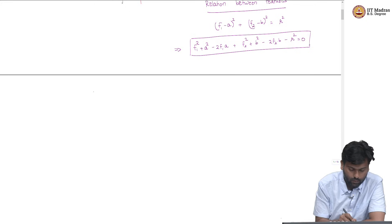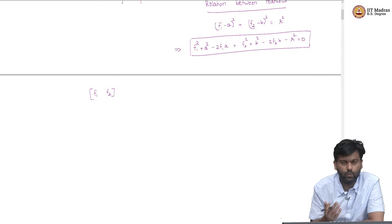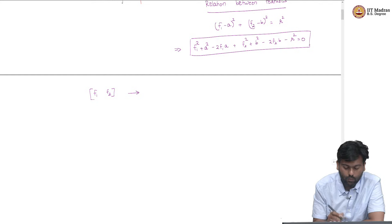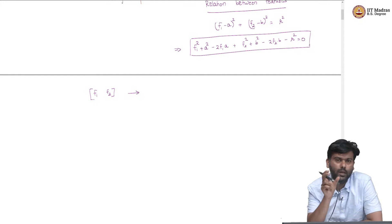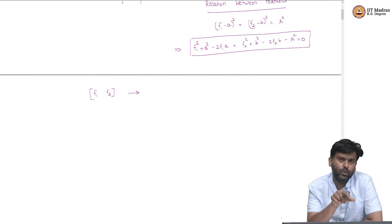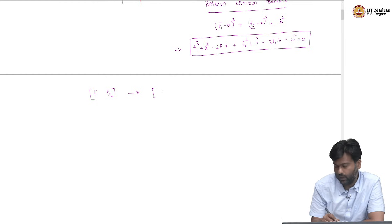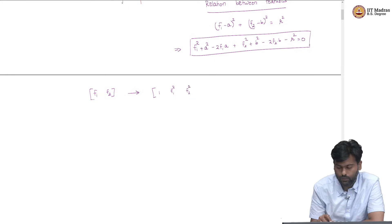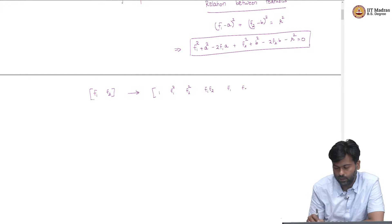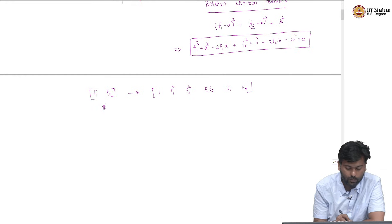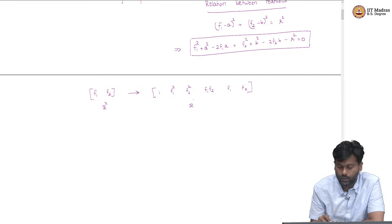Now let us try the following. Let us take a data point (F1, F2) — say F1 is 5, F2 is 10, some two numbers. For each point in the data set, I am going to map it to a different, higher-dimensional point. The mapped vector has six coordinates: the first is 1, the second is F1², the third is F2², the fourth is F1·F2, the fifth is F1, and the sixth is F2. So this is a two-dimensional vector that I give you and I map it to a six-dimensional vector.